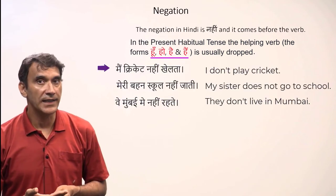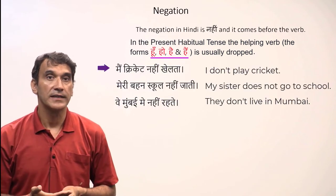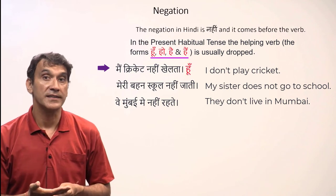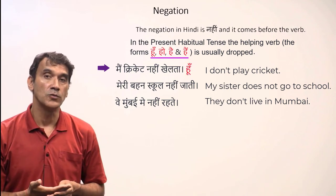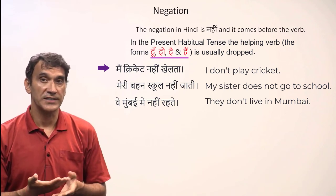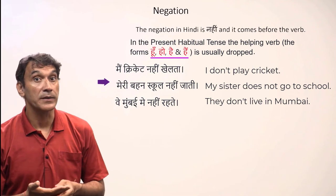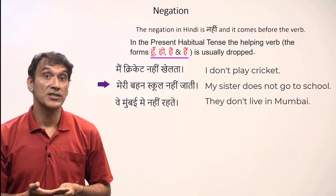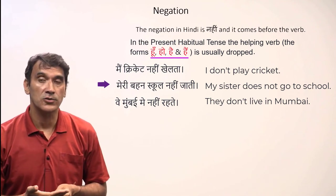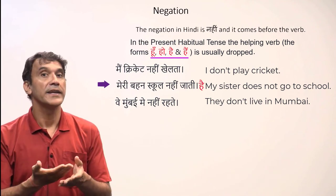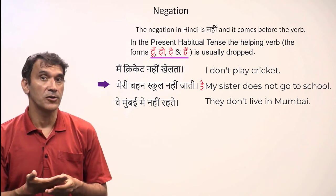'Main cricket nahi khelta' — I don't play cricket. You can see here in this sentence there is no helping verb 'hoon'; it is dropped. 'Meri behen school nahi jati' — My sister does not go to school. Again, you can see that the helping verb 'hai' is dropped.